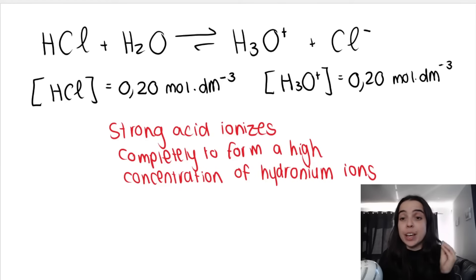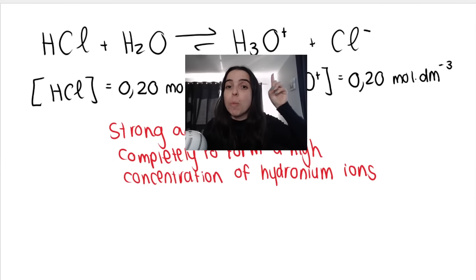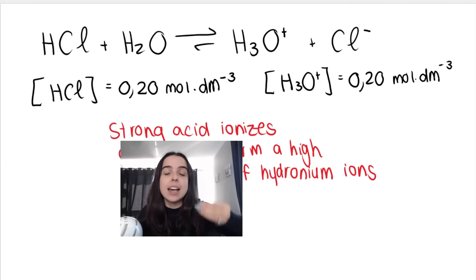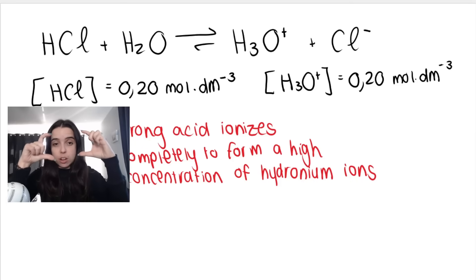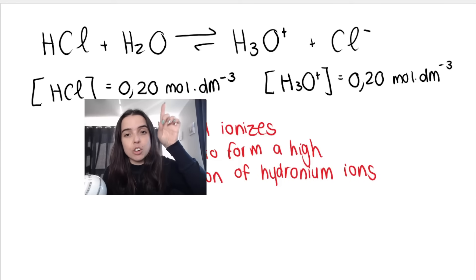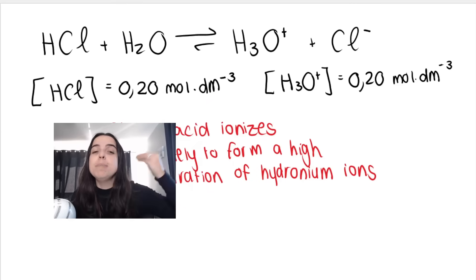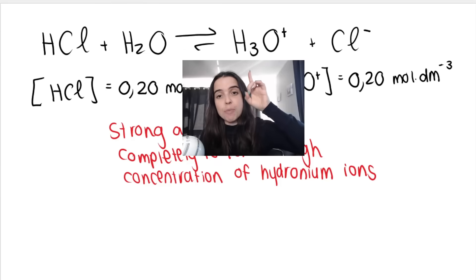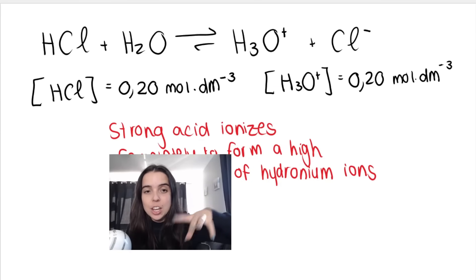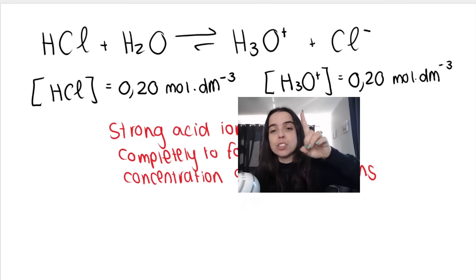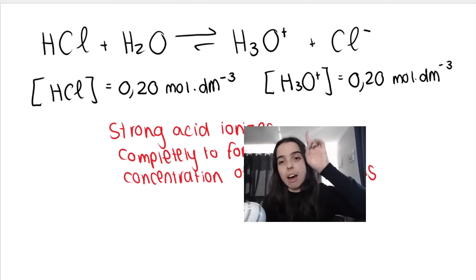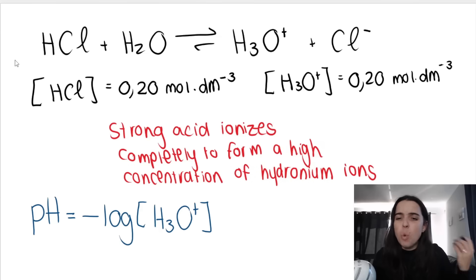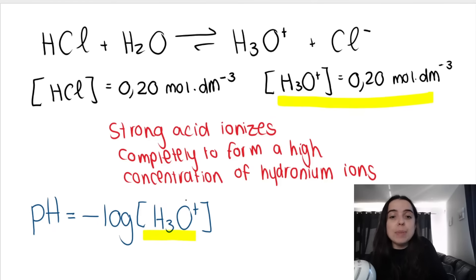The implication of a strong acid ionizing completely to form a high concentration of hydronium ions is that if I know the concentration of my acid — for example, if the concentration of my acid is 0.2 moles per cubic decimeter — then immediately I know that the concentration of my hydronium ions in the solution will be the same. The concentration of my acid equals the concentration of my hydronium ions because it ionizes completely. This is important because if I know the concentration of my hydronium ions, I can work out the pH of my solution.